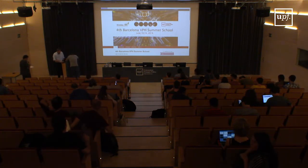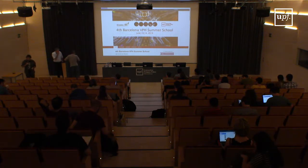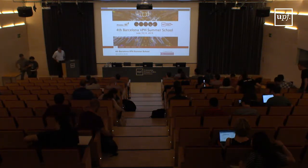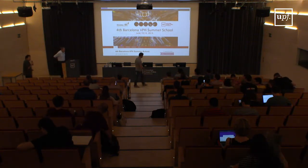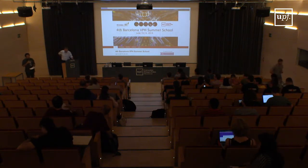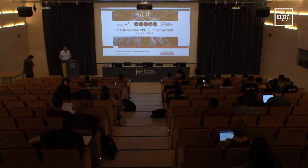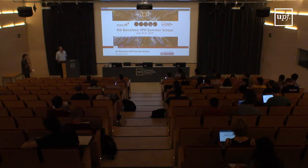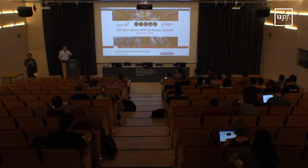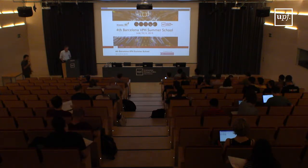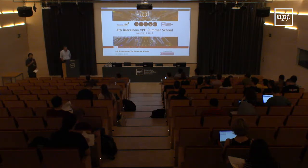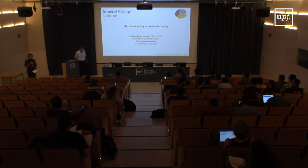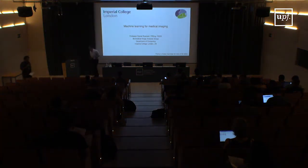Daniel is a professor of computer science at Imperial College and currently head of the department of computing. He has been a leader in the medical imaging field for the last 20 years. His CV is impressive — a bit depressing for the rest of us — with an amazing amount of citations, publications, and h-factor. He has had a natural talent for creating trending topics, being at the very beginning of developments in non-rigid registration and image reconstruction, particularly in MRI, and more recently in machine learning and deep learning.